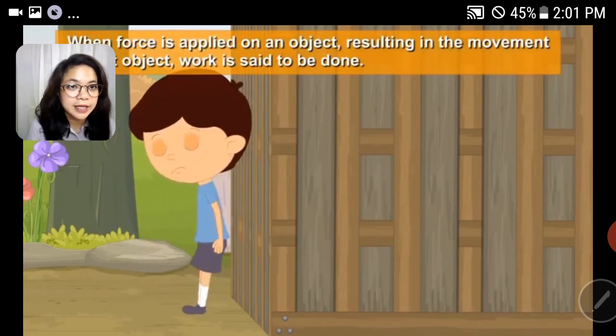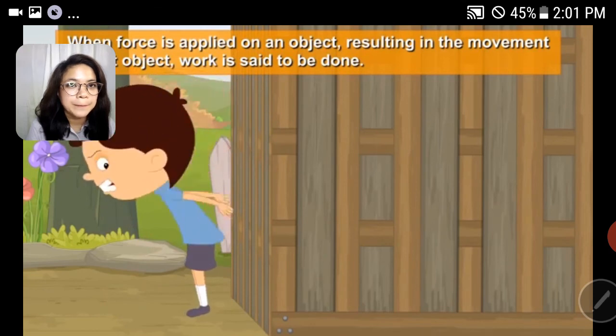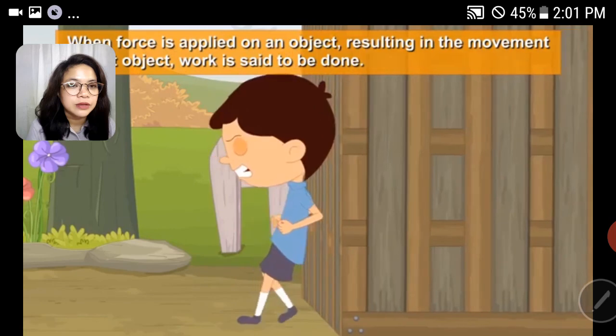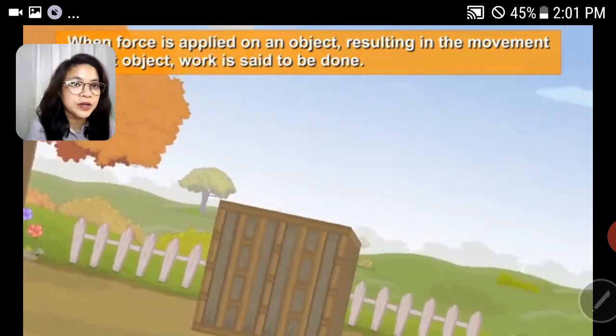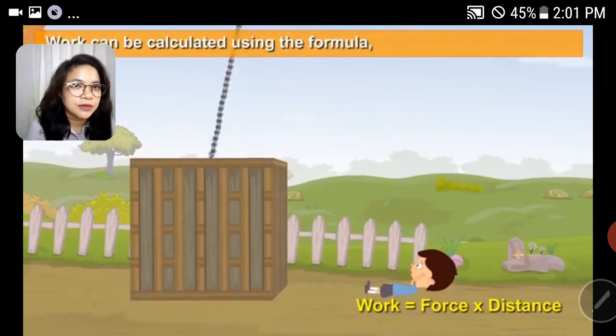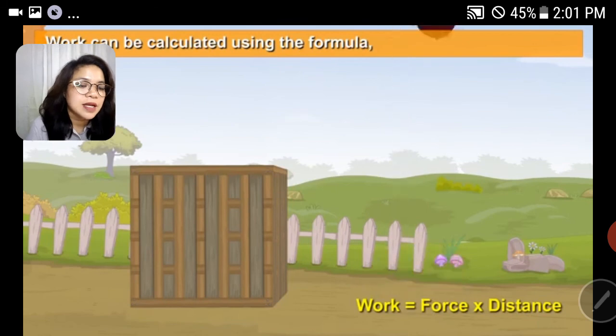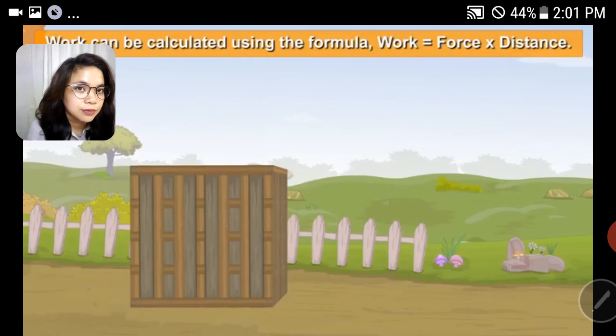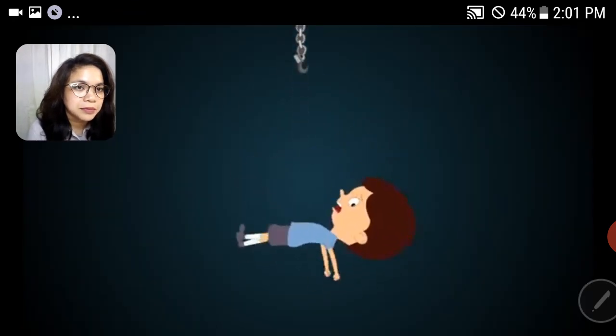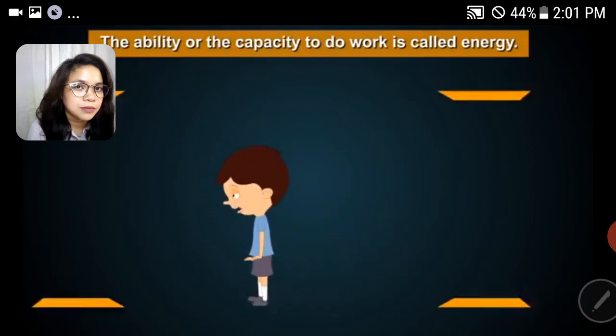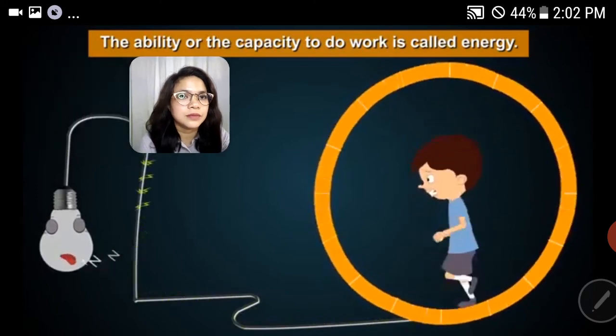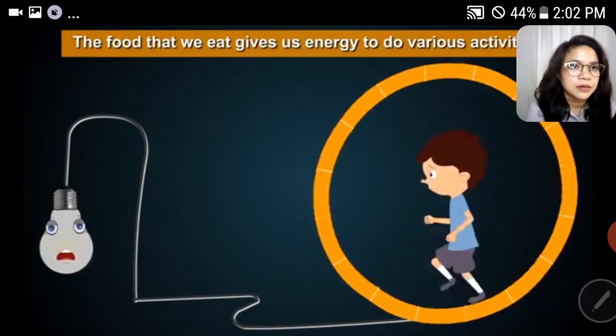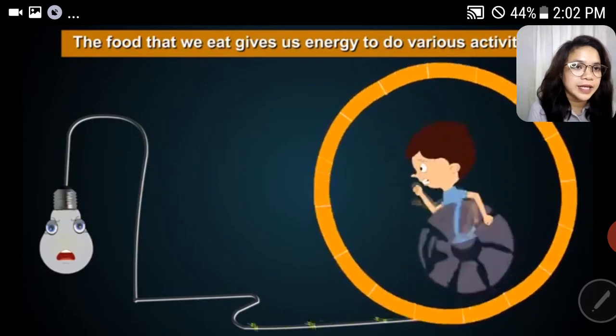When force is applied on an object resulting in the movement of that object, work is said to be done. Work can be calculated using the formula: work done is equal to force into distance. The ability or the capacity to do work is called energy. The food that we eat gives us energy to do various activities.